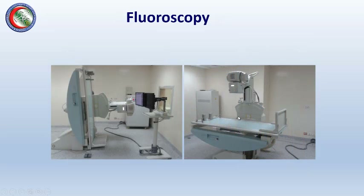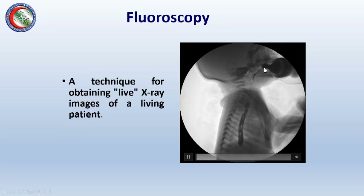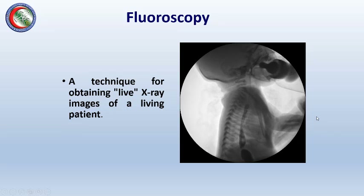This is a fluoroscopy machine with the same setup as an X-ray machine: an X-ray source, a table that can rotate so the patient can stand or lie down, and a special camera behind the machine with a screen showing the live image. Here is an example of a fluoroscopic study for a baby, where we give contrast through a bottle and can see it moving in real time through the esophagus into the stomach.